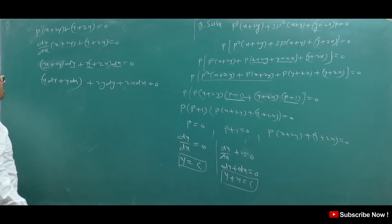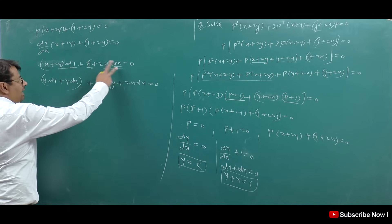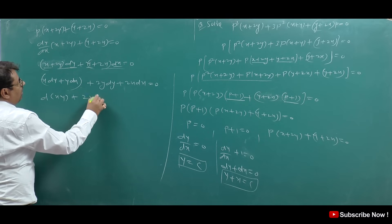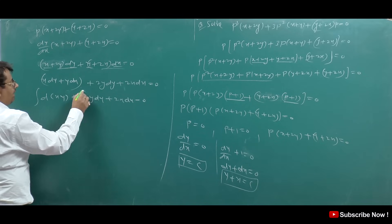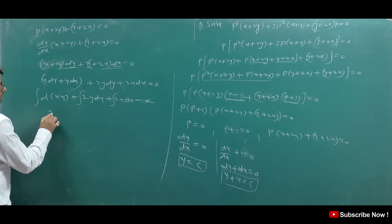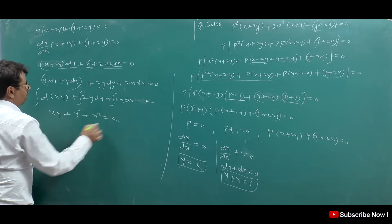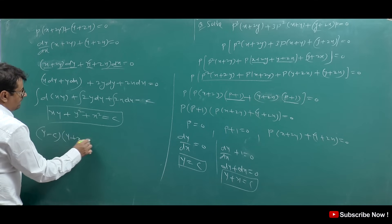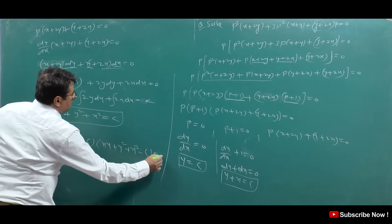Expanding factor 3: x·dy + 2y·dy + y·dx + 2x·dx = 0. We recognize x·dy + y·dx = d(xy), and 2y·dy = d(y²), 2x·dx = d(x²). Integrating: xy + y² + x² = C. The final combined answer is (y - C)(y + x - C)(xy + y² + x² - C) = 0.